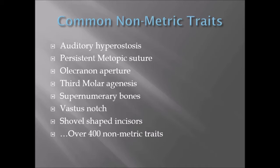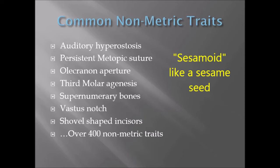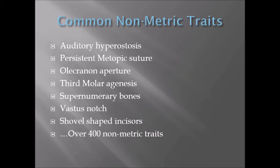Other common non-metric traits include: a persistent metopic suture, which is a suture line that goes between the two eyes that some people retain throughout life; olecranon apertures, which are openings in the elbow possibly associated with hyperextension; third molar agenesis, meaning you don't get your wisdom teeth; supernumerary bones, including tiny sesamoid bones that form in tendons of areas of high usage; a vastus notch found in the kneecap; and shovel-shaped incisors.